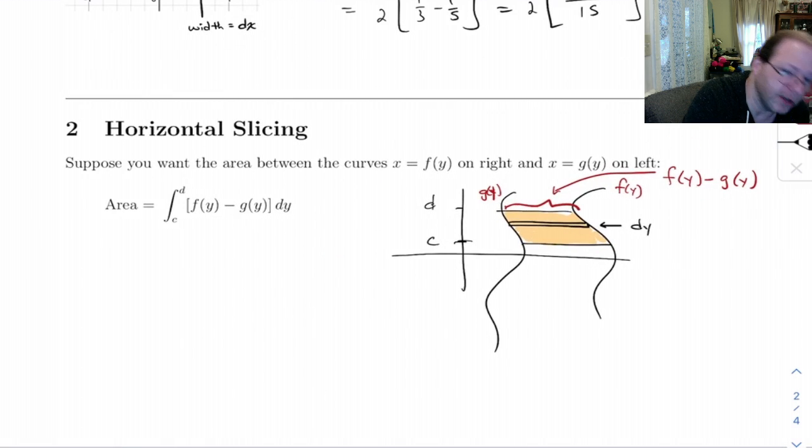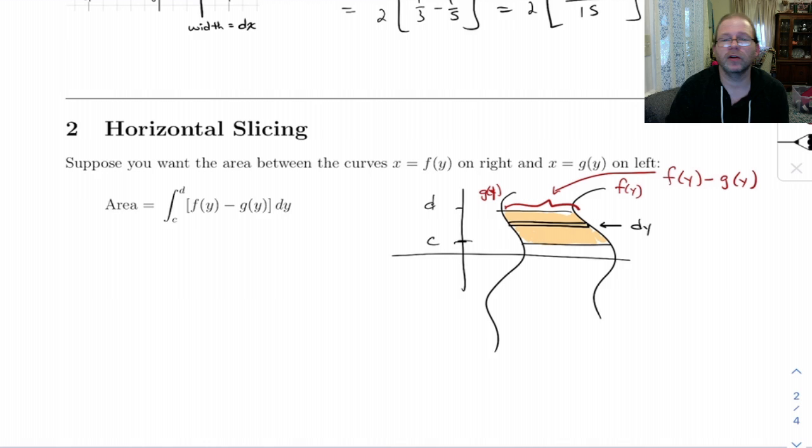So the area of that little rectangle is going to be f of y minus g of y times dy. So that's exactly what we're integrating over there.